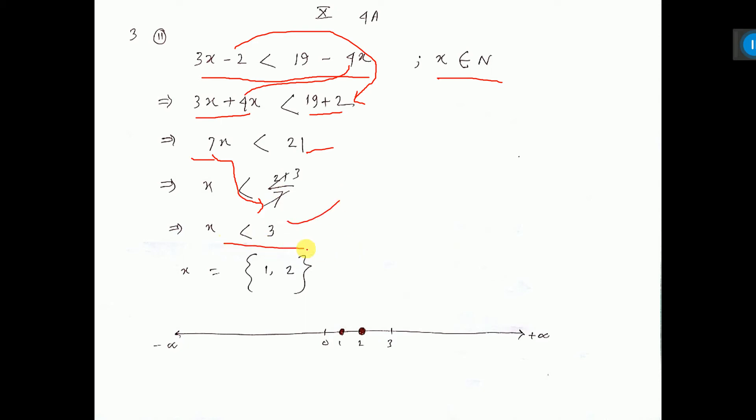Now x less than 3 and x element natural number. Natural number starts from 1, so 1, 2, 3, 4 like this. But x less than 3, so it will be 1 and 2.